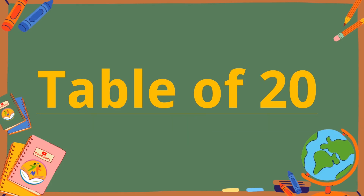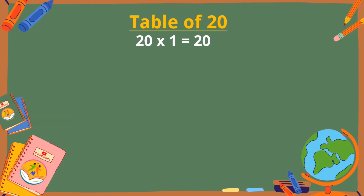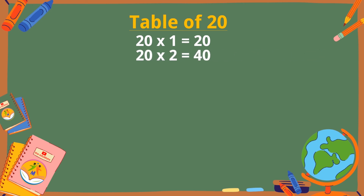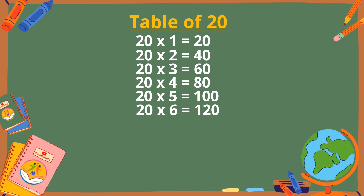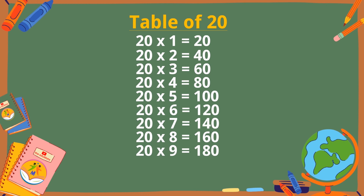Table of 20. 20 ones are 20, 20 twos are 40, 20 threes are 60, 20 fours are 80, 20 fives are 100, 20 sixes are 120, 20 sevens are 140, 20 eights are 160, 20 nines are 180, 20 tens are 200.